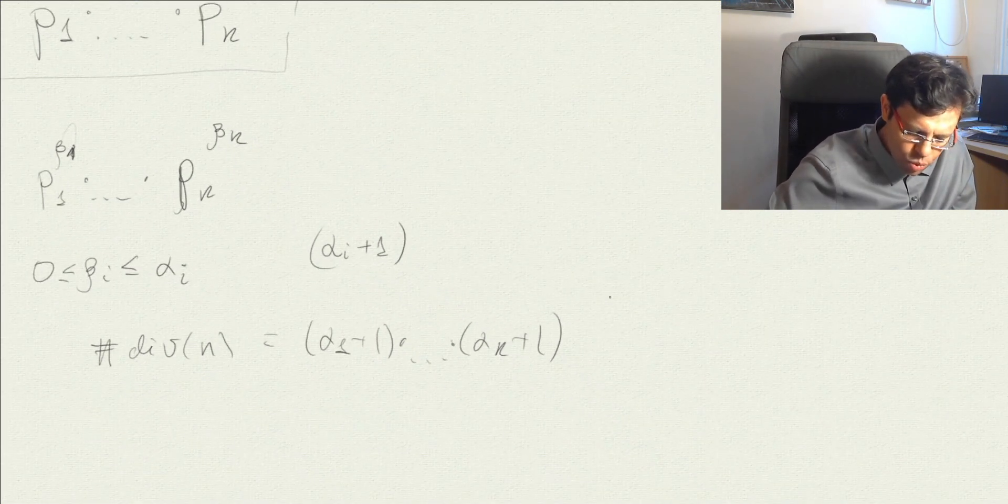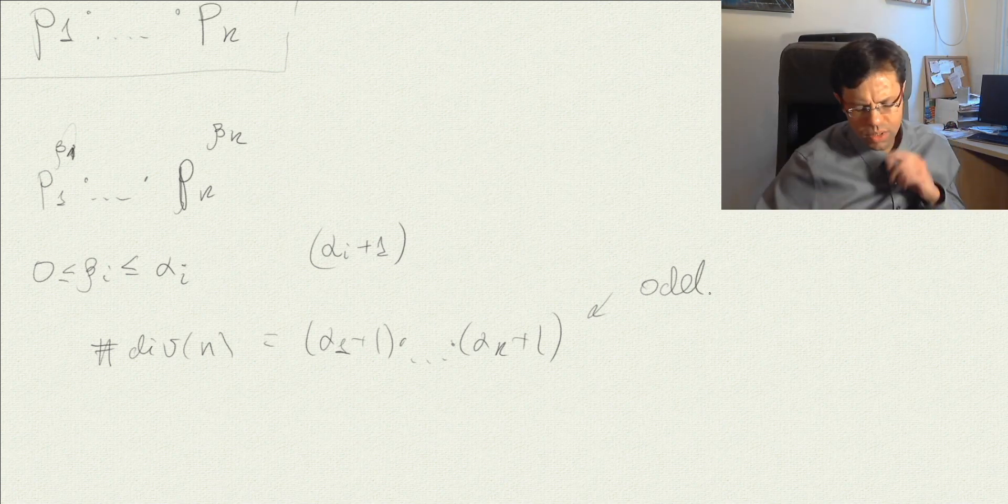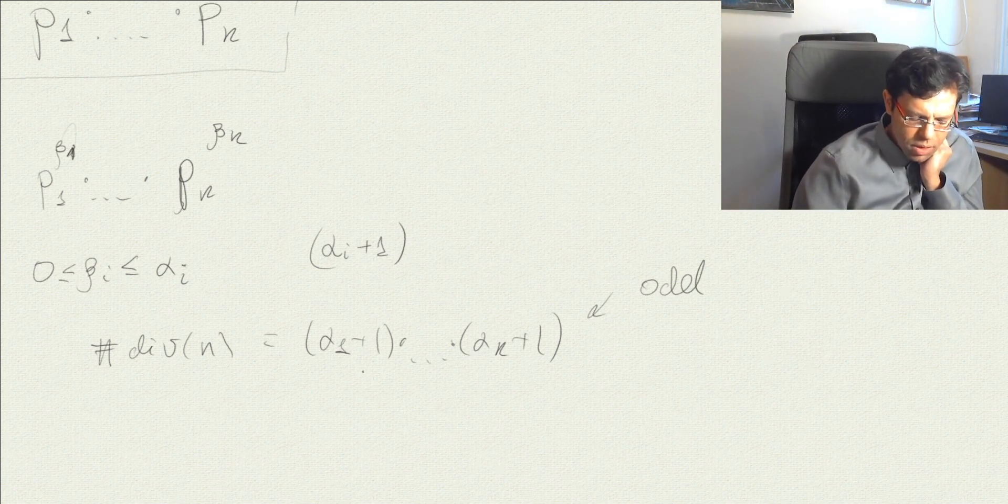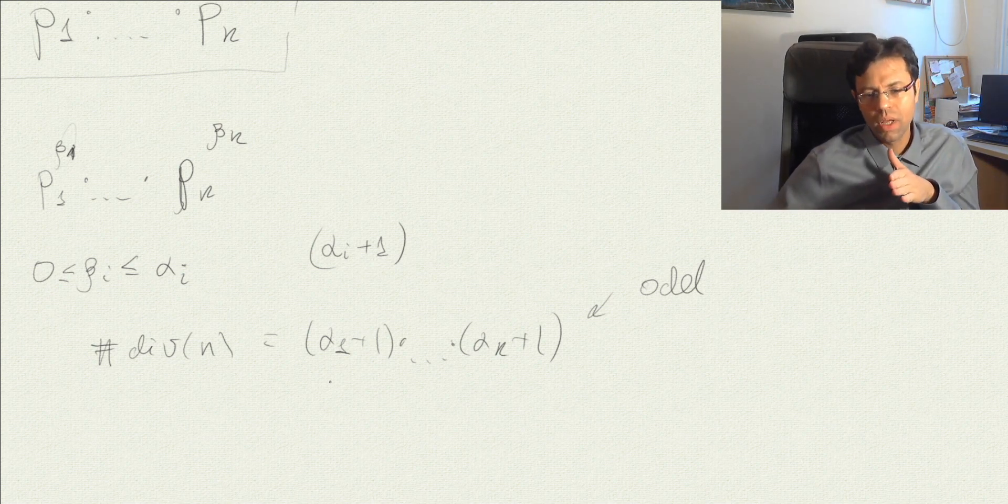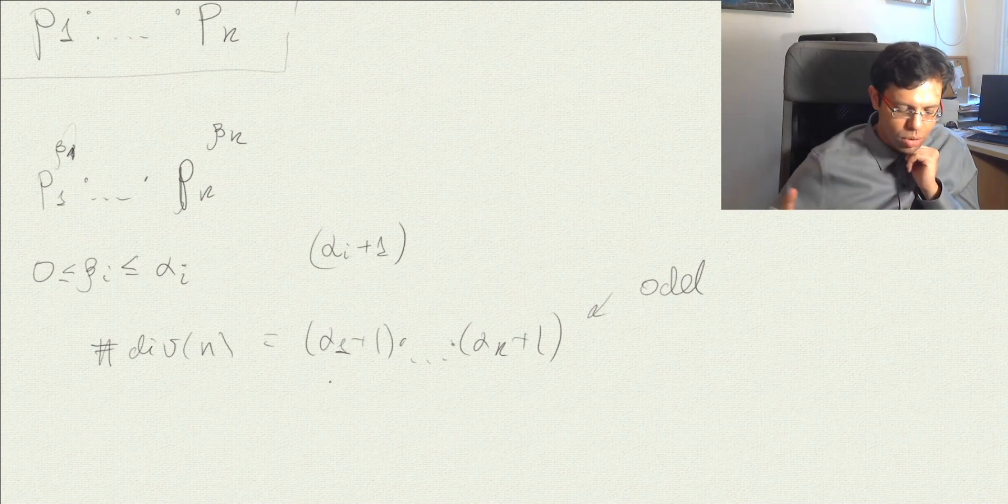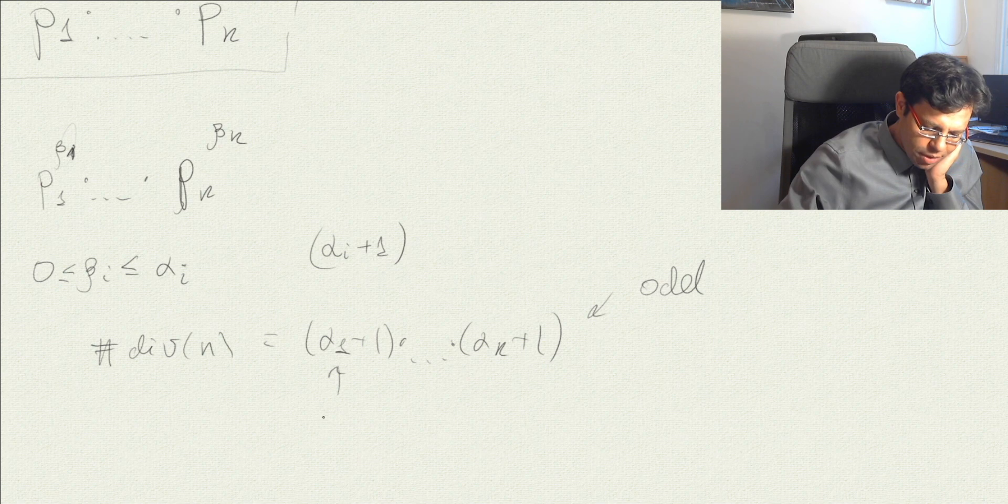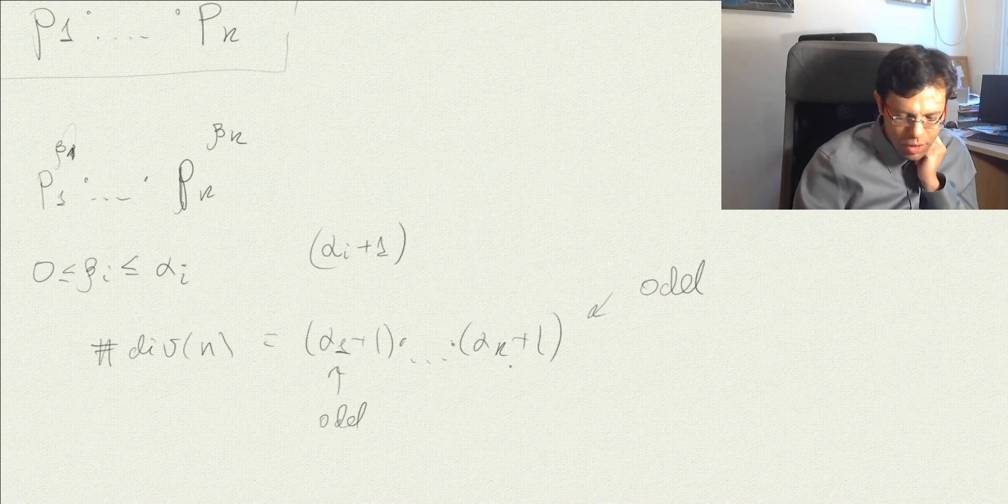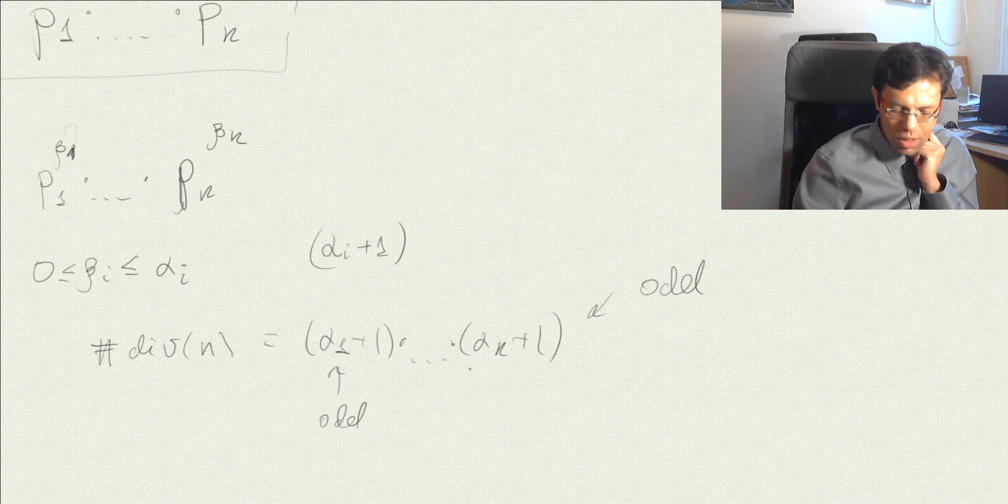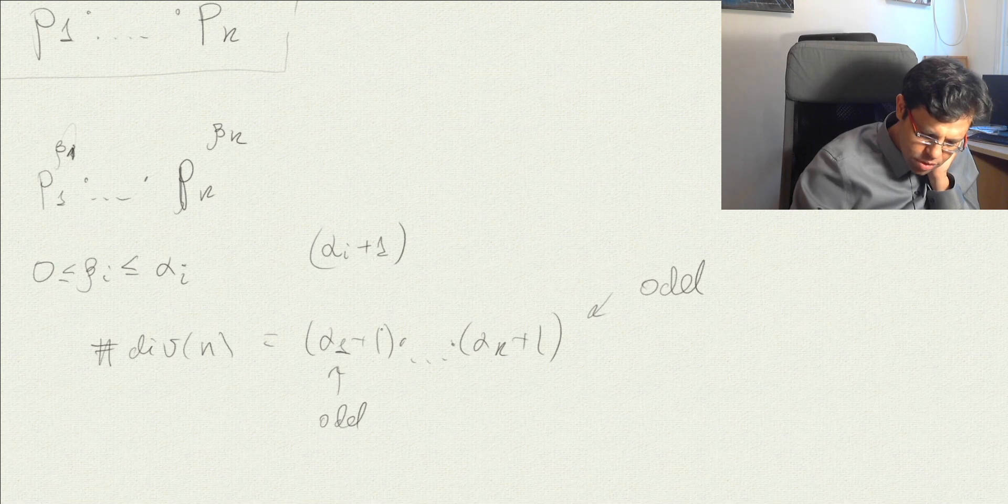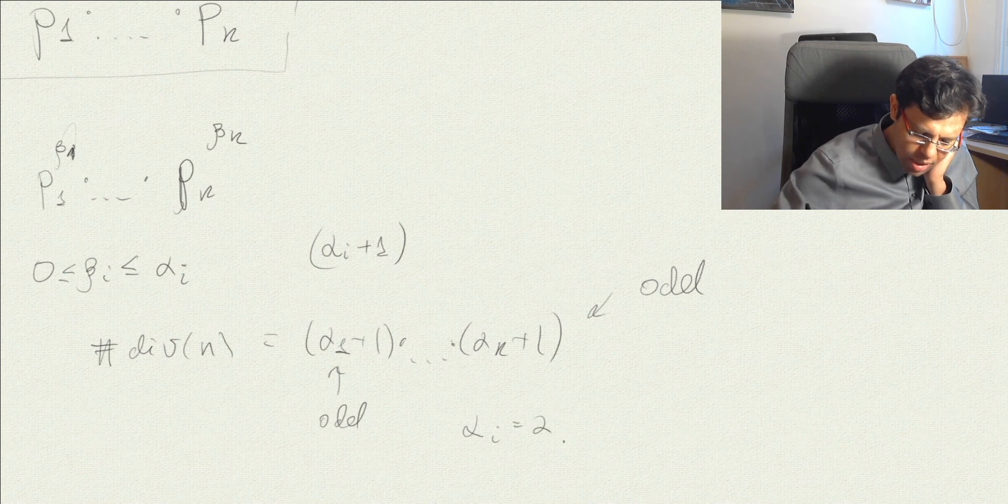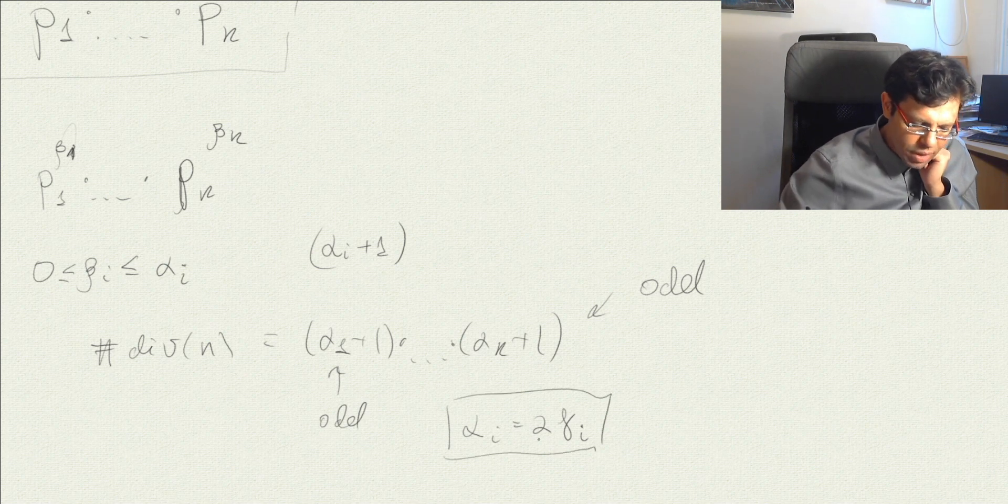Let's see what this means. We have this plus 1 here. Actually, whenever we take a product of an even number with any number, it's even. So in order for a number to be odd, it has to be a product of odd numbers, which means that every factor here must be odd. One even factor here would suffice to make this number even, and therefore even number of divisors. This means that if this is odd, and we have plus 1, each alpha i can be written as 2 gamma i. So each alpha is essentially even.